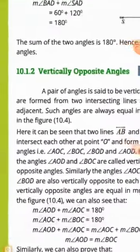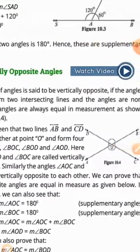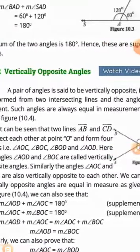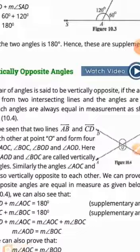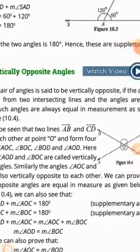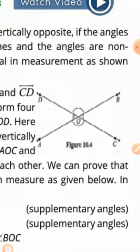Now we have vertically opposite angles. A pair of angles is said to be vertically opposite if the angles are formed from two intersecting lines and the angles are non-adjacent. Such angles are always equal in measurement, as shown in the figure. These two intersecting lines form points A, B, C, D and the non-adjacent angles are equal.